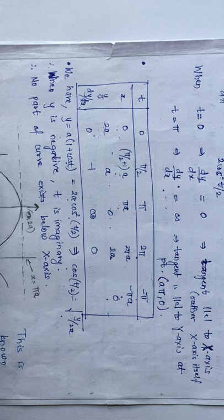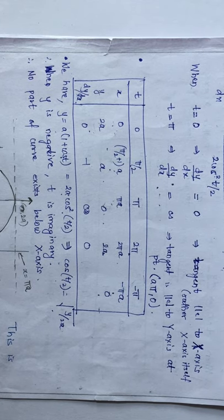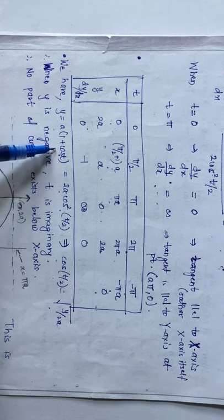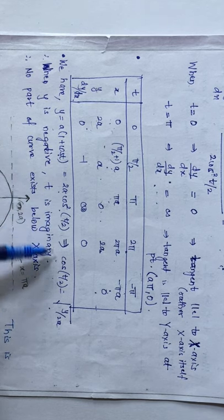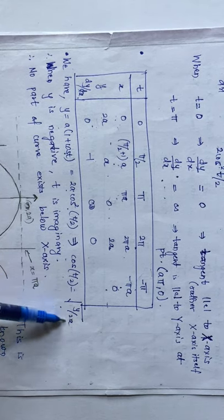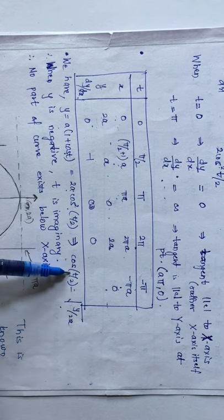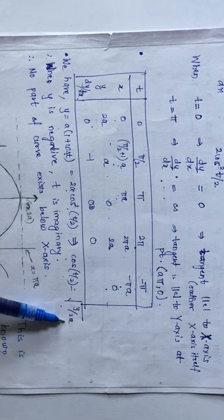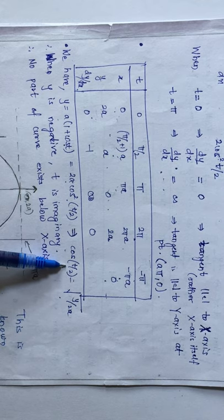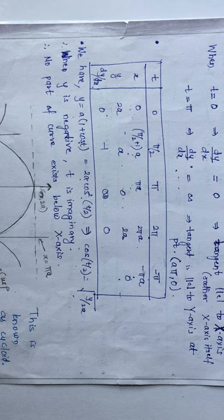We also check the region of absence of the curve. The curve lies between y = 0 and y = 2a on the positive side. To check what happens for negative y, consider y = a(1 + cos t) = 2a cos²(t/2), giving cos(t/2) = √(y/2a). If y is negative, t becomes imaginary. Therefore, there exists no curve below the x-axis.